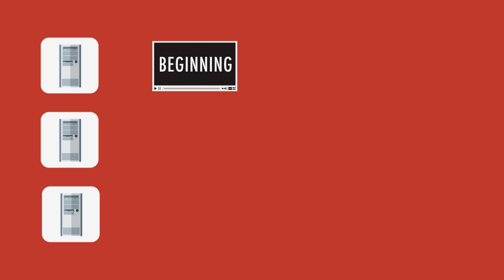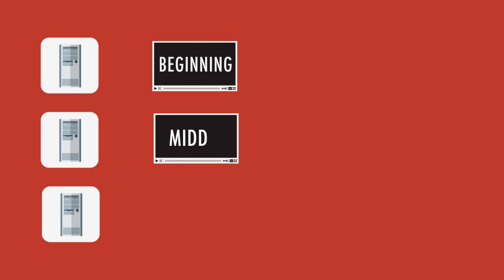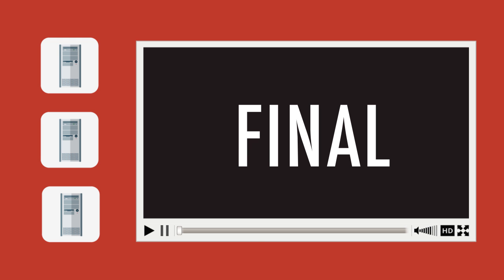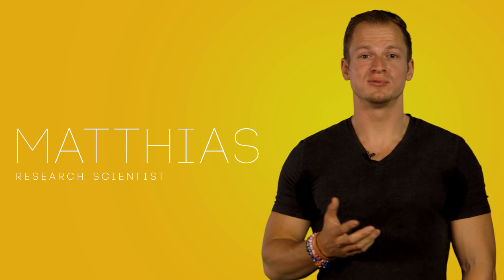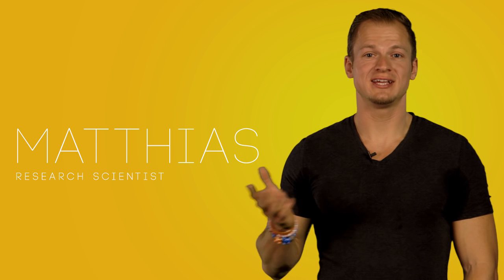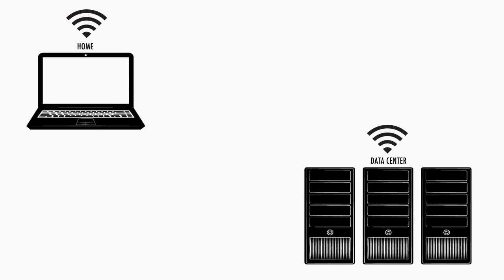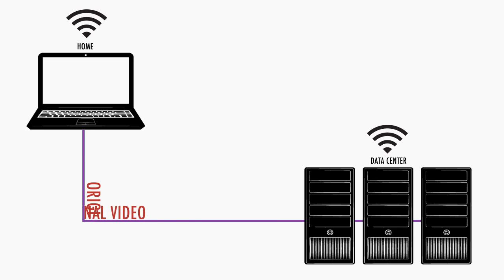You could stabilize the beginning of the video on one computer, the middle on another computer, and the end of the video on a third computer, and then reassemble all the pieces at the end. The internet gives you access to the compute power of a data center at your home, so you're not limited to your own machine. All you do is send a request to our data center that says, stabilize this video, and then we kick things off in the data center, computing the stabilized video and simply sending it back to you.